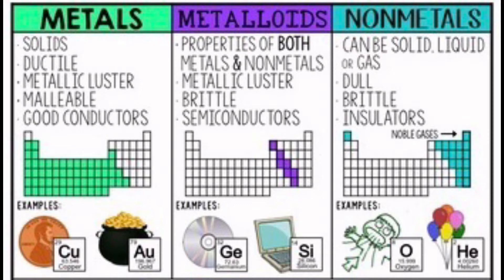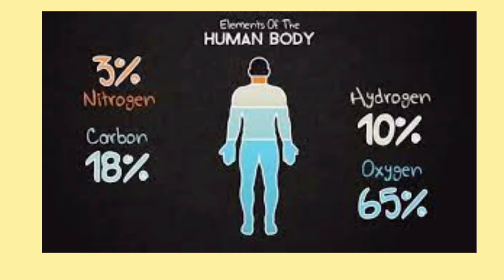Examples of non-metals are carbon and oxygen. Metalloids have some characteristics of metals and some characteristics of non-metals. Silicon and arsenic are examples of metalloids.